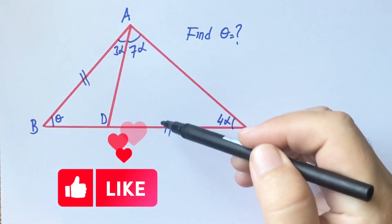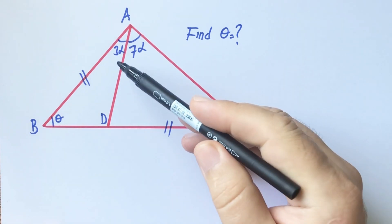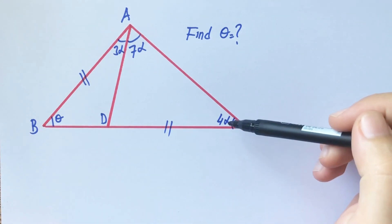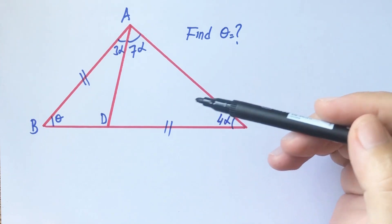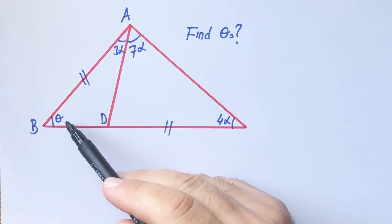Okay, these two parts are equal and here is three alpha, here is seven alpha, here is four alpha, and then theta is asked.